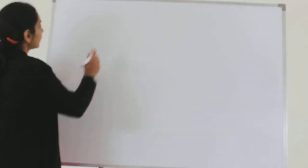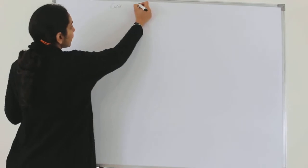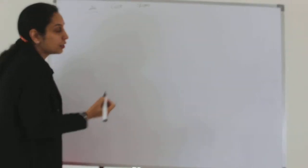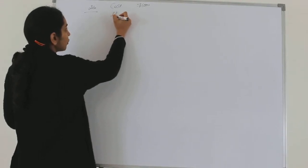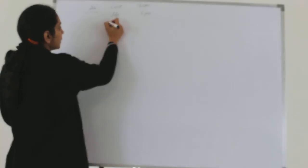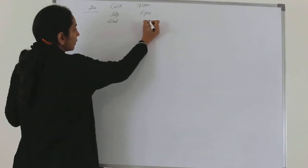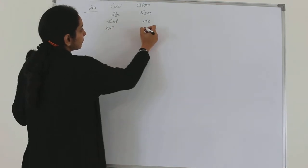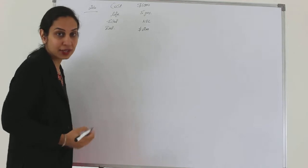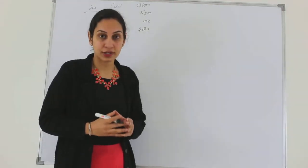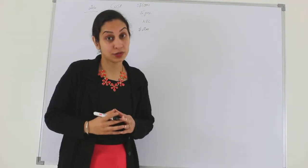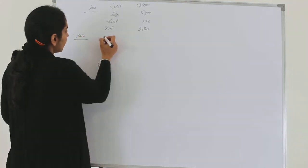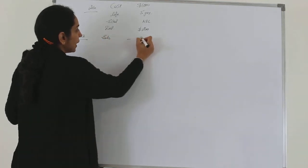Just for the sake of mentioning it, I am putting the values again. We bought an asset for $1000 in 2010. The useful life of the asset was 5 years and the scrap value here is nil. So how much is the depreciation under the straight line method we will be charging every year? $200 a year. That is how we will be charging. Let's make a ledger account of this and understand how we dispose of an asset. Let's say we sell the asset in 2012 for $870.